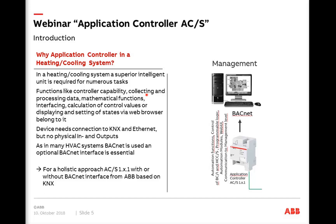Why do we need an Application Controller in an HVAC system? There are some superior intelligent units required for numerous tasks: controller functionality, collecting and processing data, mathematical functions, comparing values, and interfacing — in our case BACnet and a web user interface. In our ClimaEcho solution, we need superior intelligence for field devices like the heating-cooling circuit controller and the boiler-chiller interface.